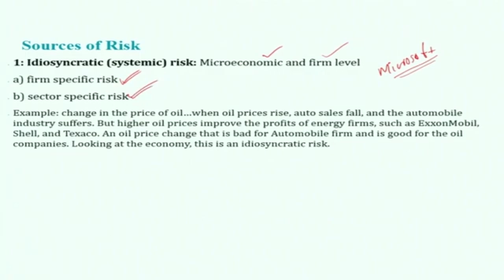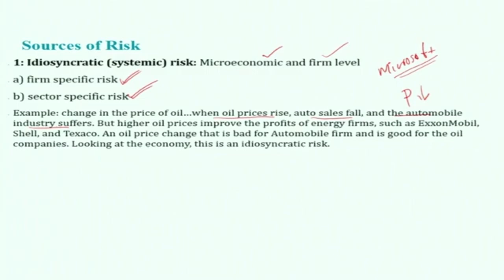Elaborating further, we get sector-specific risk. For example, take a change in the price of oil. If there is an increase in the price of oil, auto sales fall and the automobile industry suffers. A supply shock in the form of an oil price increase would cause automobile security prices to decline. That sector is visually affected because of the increase in the price of oil — this is called sector-specific risk, also referred to as systemic risk.